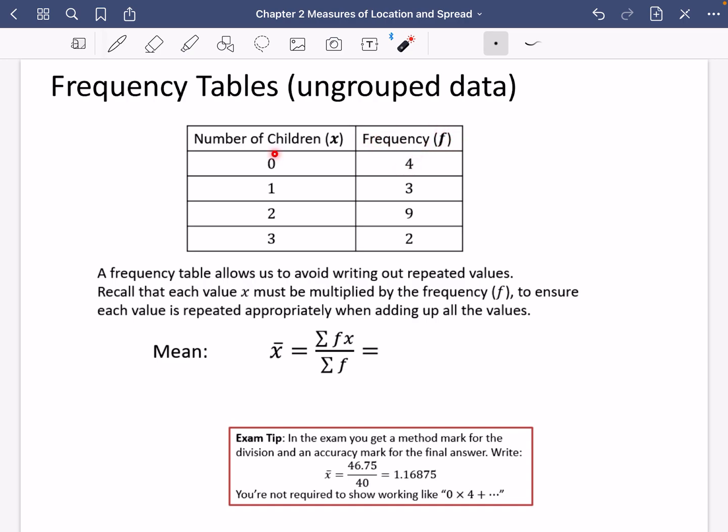So there are four families that have got no children, three families with one child, etc.